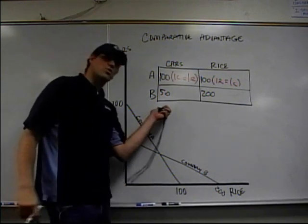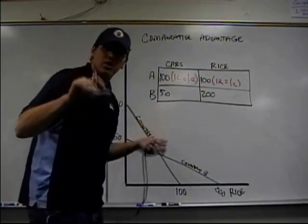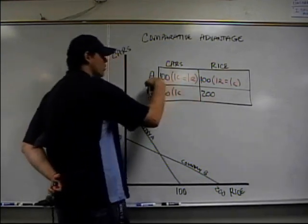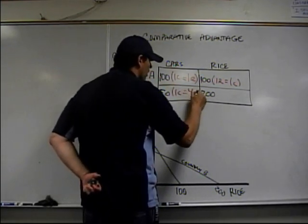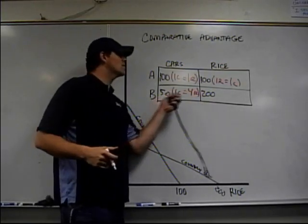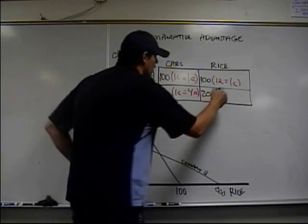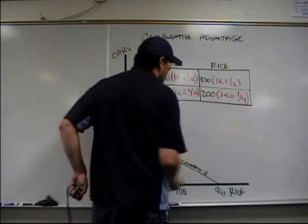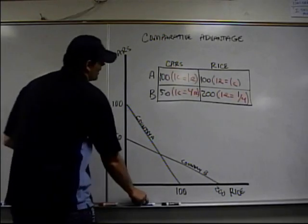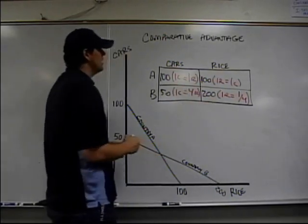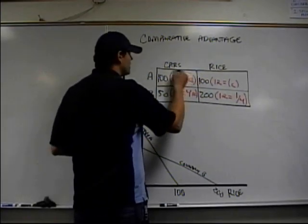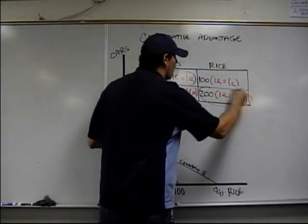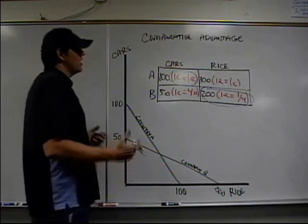Now down here with Country B, this is a trick — 'other goes over.' One car is going to cost them four rice, which makes sense. Every single time they produce one car, they could've produced four rice. And each one of these rice is going to cost them the reciprocal — other goes over — which is one-fourth. All you've got to do now is pick the one that has a lower opportunity cost. Country A only gives up one rice, so they should be producing cars. Country B only gives up one-fourth a car, so they should be producing rice.